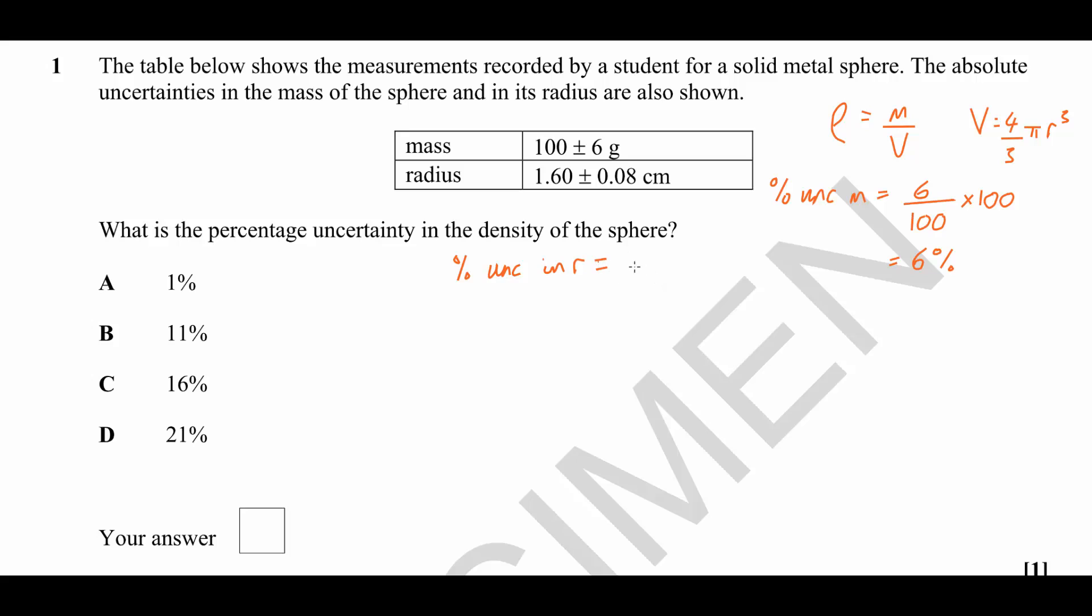Likewise, we can work out the percentage uncertainty in the radius, which is going to be equal to 0.08 centimeters—that's the absolute uncertainty—divided by the radius, which is 1.6, multiplied by 100. That will give us a percentage uncertainty of 5%.